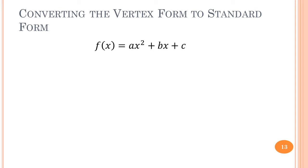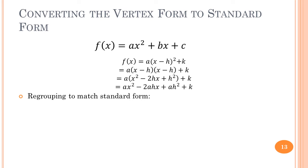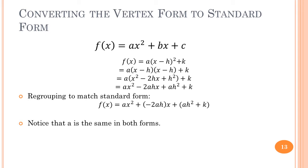We're going to convert the vertex form into the standard form. Here's the standard form — that's what we're shooting for — and the vertex form is what we're starting with. First, we expand the x minus h squared term, working out all the terms. Then we distribute a inside the terms, and regroup to match the standard form. After regrouping: a is the same in both forms, b equals negative 2ah, and c equals ah squared plus k.